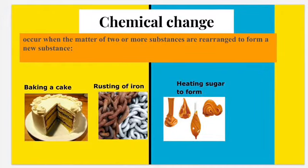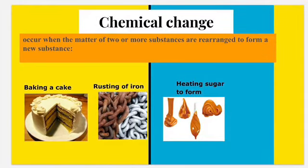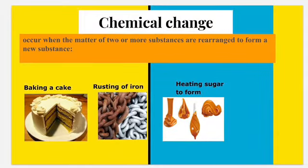Examples of chemical changes include baking a cake, iron that has rusted — that's a chemical change — and also heating sugar to form caramel. That's also a chemical change.